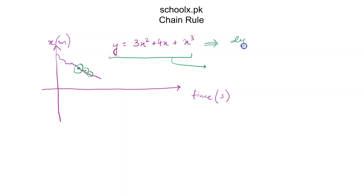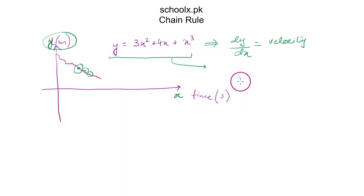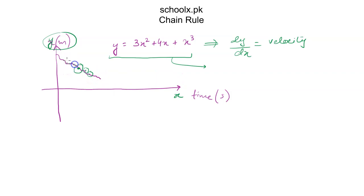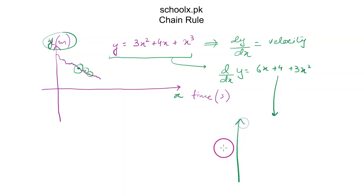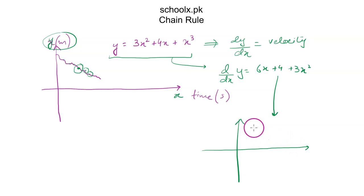The gradient of a displacement-time graph gives you the velocity, because y is our distance and x is our time. So the rate of change of y with respect to x gives us the velocity of that meteoroid at any point. You can simply take the derivative of this equation, which gives you 6x + 4 + 3x², plot the graph of this, and get the velocity at all points at all times.